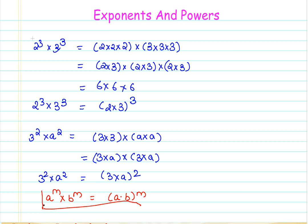So this is the third property. The property says multiplying the numbers with different base and the same power or exponent gives us the multiplication of the bases raised to the same exponent. So if I have a raised to m cross b raised to m, where a and b are different bases and m is the same exponent, then I can directly multiply a and b and then raise the result to the power m. I hope this property is clear.